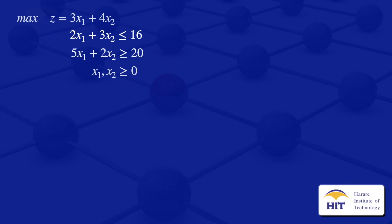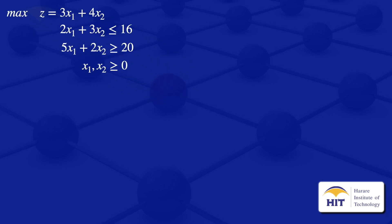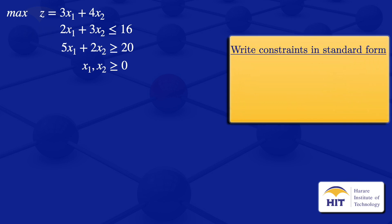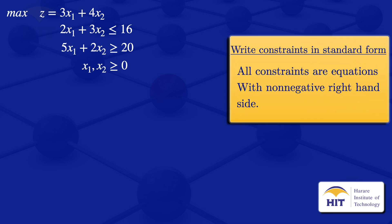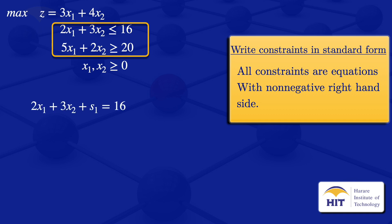The first step to find the dual problem is to write the constraints in standard form — that is, to write all constraints as equations with non-negative right-hand side. For the first constraint, we have less than or equals to 16, so to make it an equation we add a slack variable s1, giving us 2x1 plus 3x2 plus s1 equals 16.